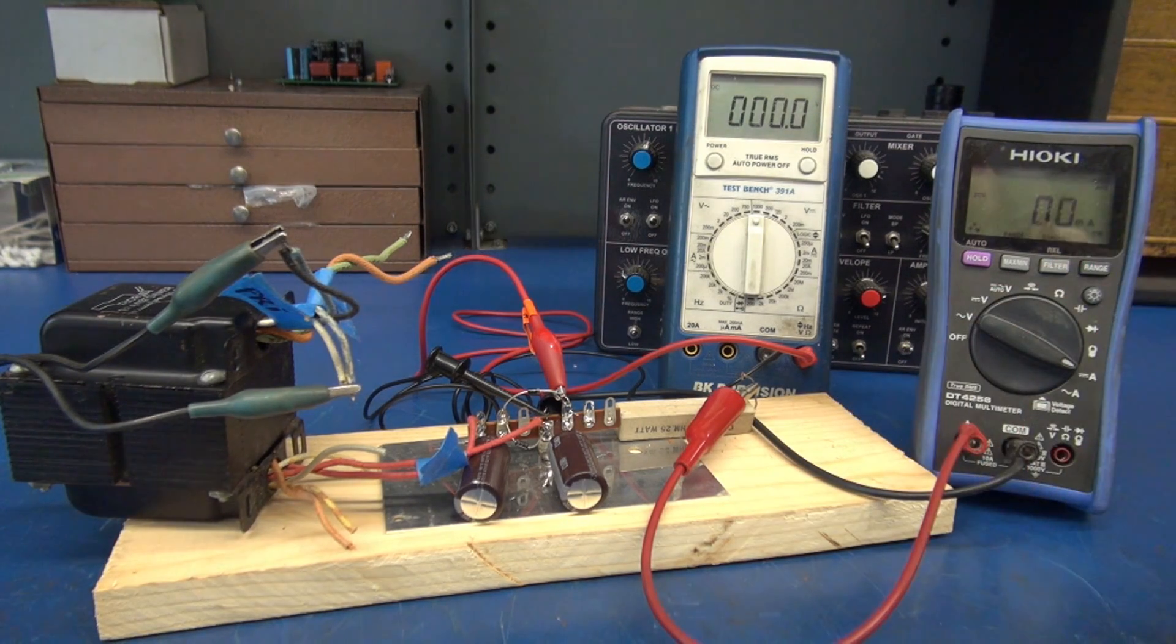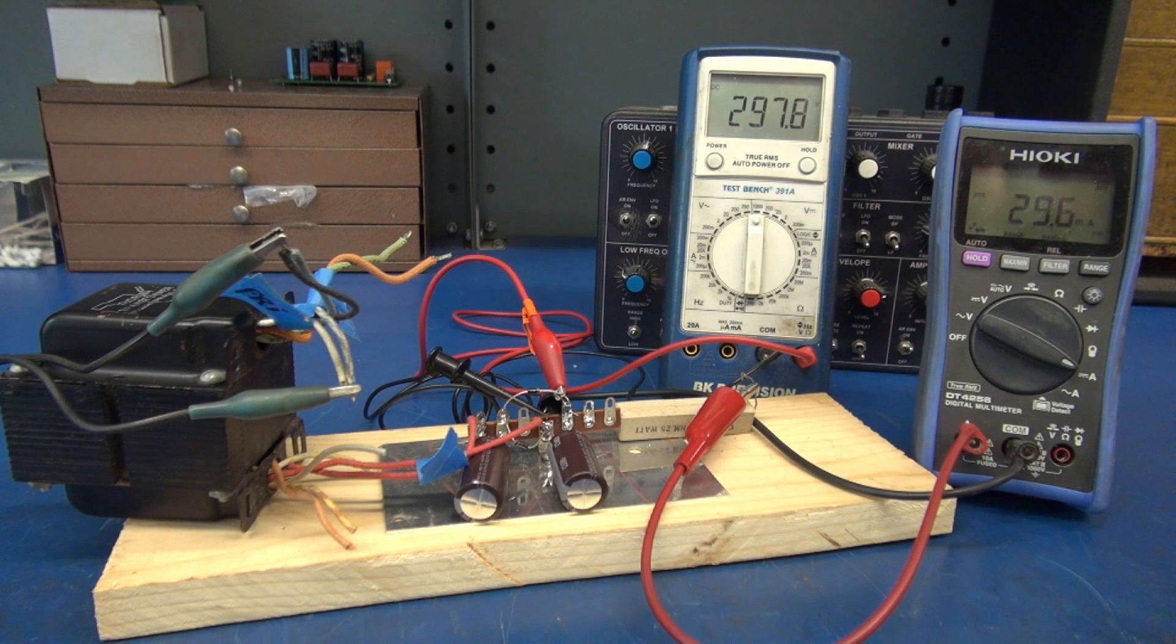I have a 10k resistor so you should see the milliamps on this meter. I'm plugging it in. So we have about 297 volts and of course 29.6 milliamps. The voltage doubler circuit is working and it is stable. It can deliver enough current to drive a tube amplifier.